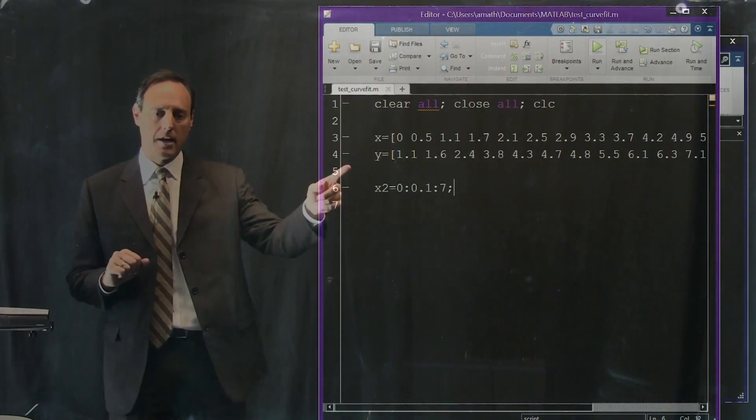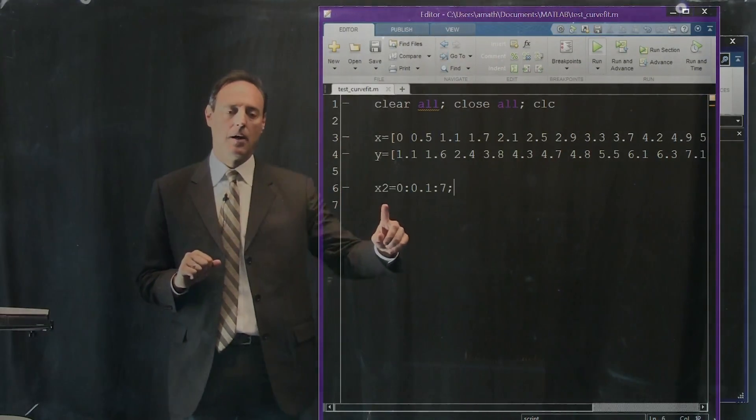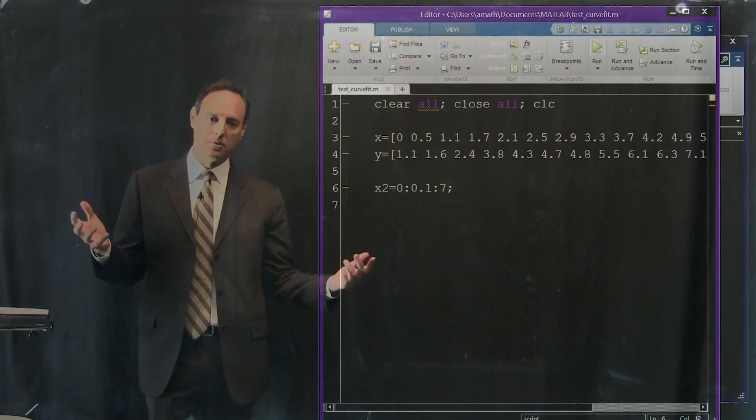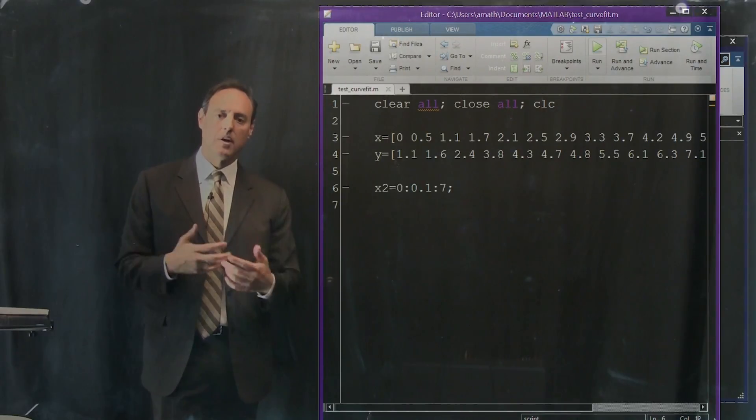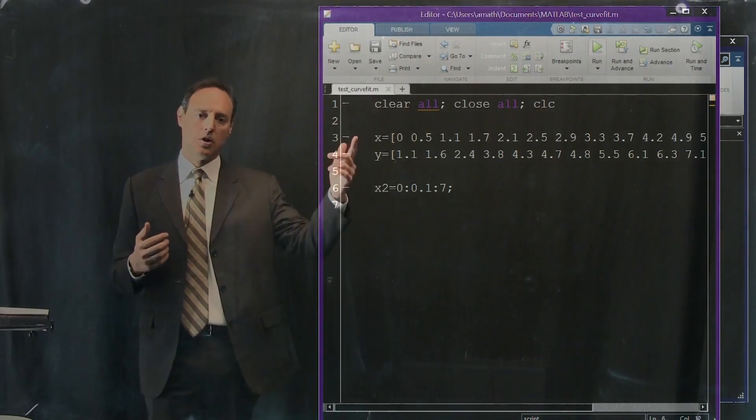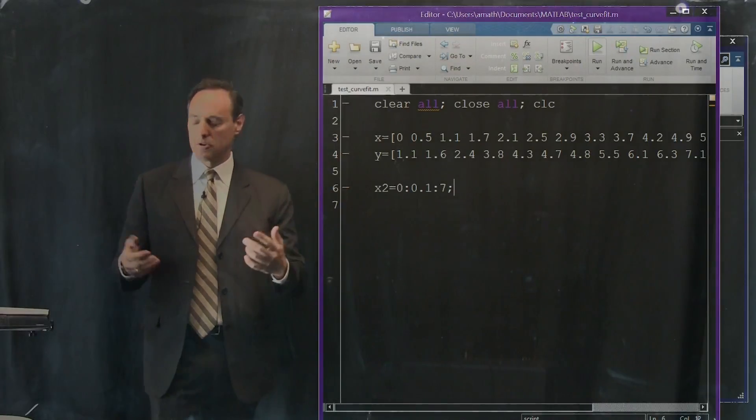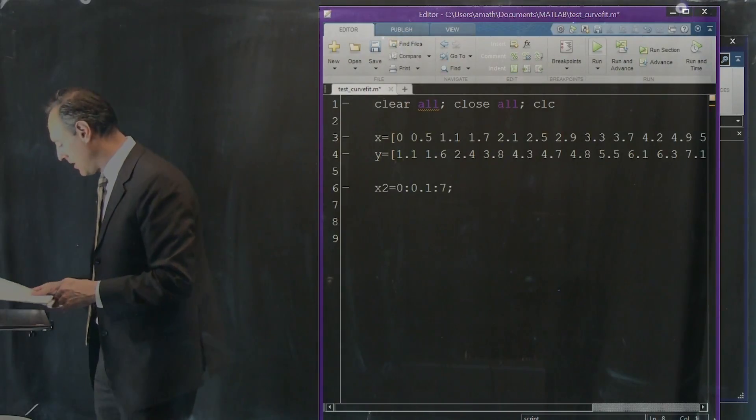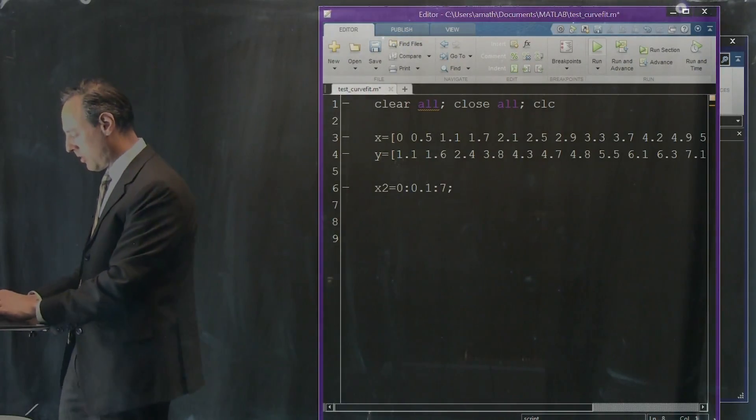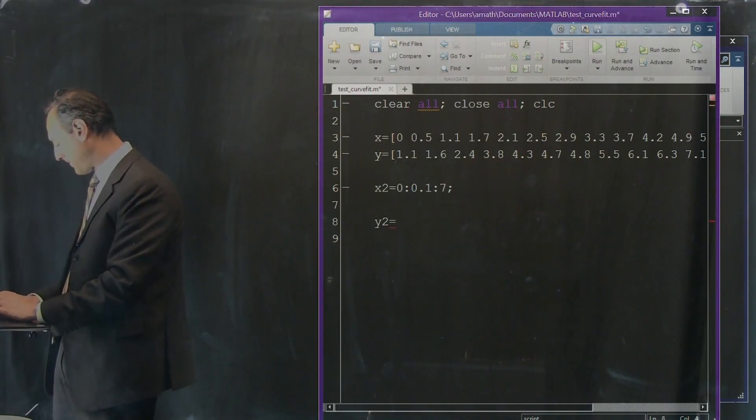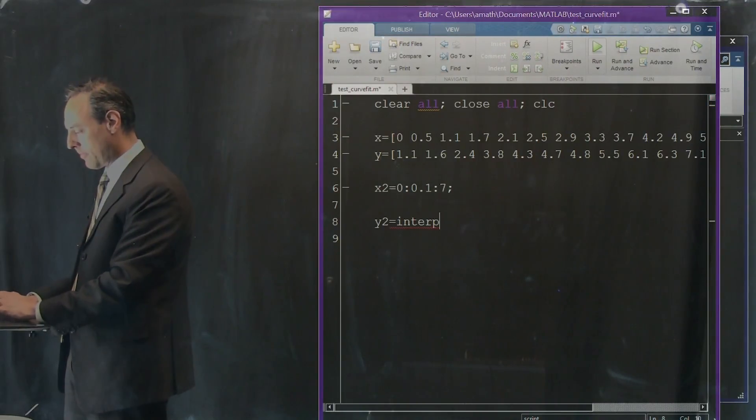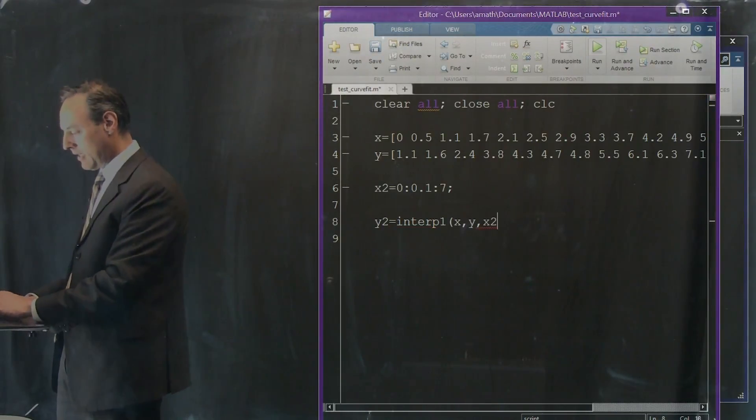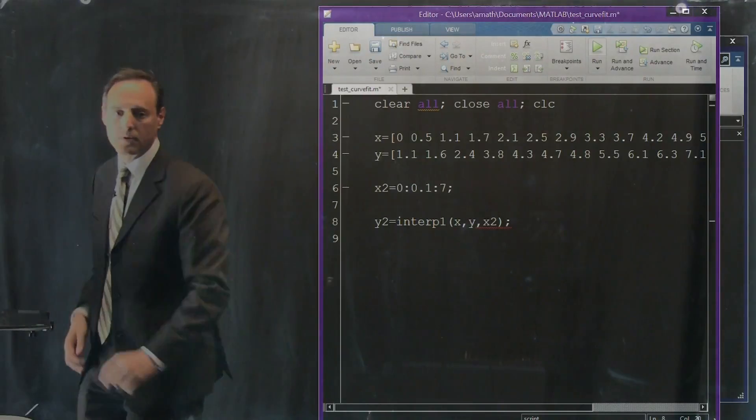So what we're going to do is go back to our original data, and we're going to look at, I want to get interpolated values at some range here. x2 is in the interval 0 to 7 in steps of 0.1. I want to fill all these values in by using this data and some interpolation. So one of the commands in MATLAB is called interp1. Let's talk about how interp1 works. So I can produce some new data using interp1. It's one-dimensional interpolation, I put my data in, and I tell it where I want interpolated values.